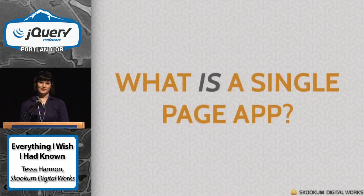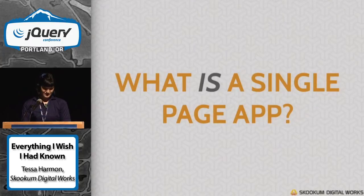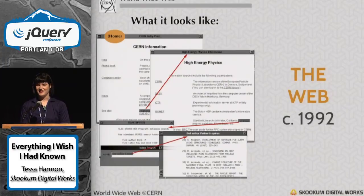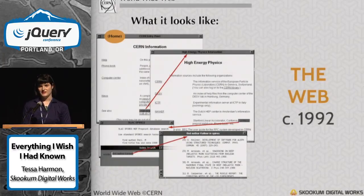I think it's important to understand what a single page app is and how it fits into the context of the web as a whole, so I'm going to start out with a small history lesson. Basically we have the web circa 1992 — it's a way to link scientific documents together with hyperlinks. This is Tim Berners-Lee's vision of the web, where research scientists published information and were able to link to each other.